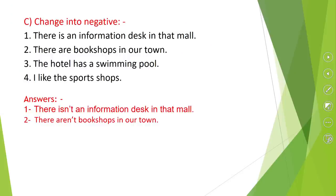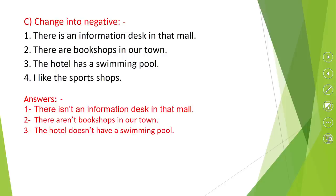Number three: the hotel has a swimming pool. Here we have the verb 'has,' which belongs to the present simple tense. Whenever we have 'has' followed by a noun, it means 'possesses' — so it is a main verb. We use the auxiliary verb 'does,' and for negative it becomes 'doesn't.' The verb 'has' changes back to its base form 'have.' So: the hotel doesn't have a swimming pool.